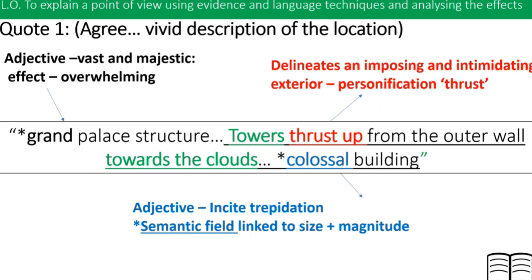So we're going to analyse this quote: 'the grand palace structure, towers thrust up from the outer wall towards the cloud and the colossal building.' Because this quote agrees with the part of the statement where it says the writing is a vivid description. So the adjective 'grand' suggests the palace is vast and majestic and has an overwhelming effect on the reader. The personification of 'thrust up' — that's something that humans do — delineates an imposing, intimidating exterior. And also the adjective 'colossal' incites fear, anxiety, trepidation.